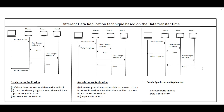Now let's talk about database replication techniques based on data transfer timing. We have three types: synchronous, asynchronous, and semi-synchronous replication. In synchronous replication, when the client writes to the master at time T1, the master holds the request, writes to its own database, then writes to slave 1 and gets confirmation, then writes to slave 2 and gets confirmation, and only then returns a success response to the client at time T2.